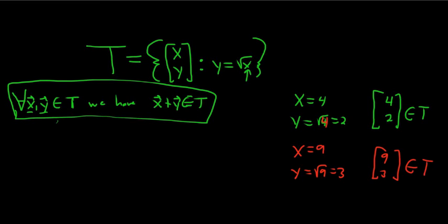These two vectors, (4, 2) and (9, 3), are in T. So all we have to do is look at their sum and ask ourselves: is that in T? If it's not in T, then we've disproven closure and T is not closed.